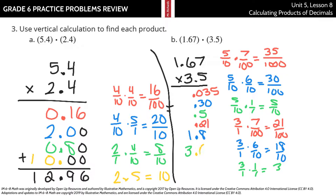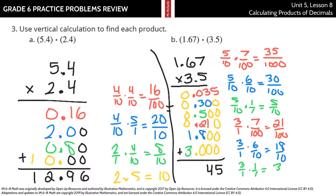Now, making sure we line up our decimal points and fill in zeros to align place values, we can add everything up. In the thousandths row: 5. In the hundredths row: 4. In the tenths row: 3 and 5 is 8, plus 2 is 10, plus 8 is 18 tenths — carry the 1. Then 1 plus 2 plus 3 is 5 plus 1 is... our solution is 5 and 845 thousandths.